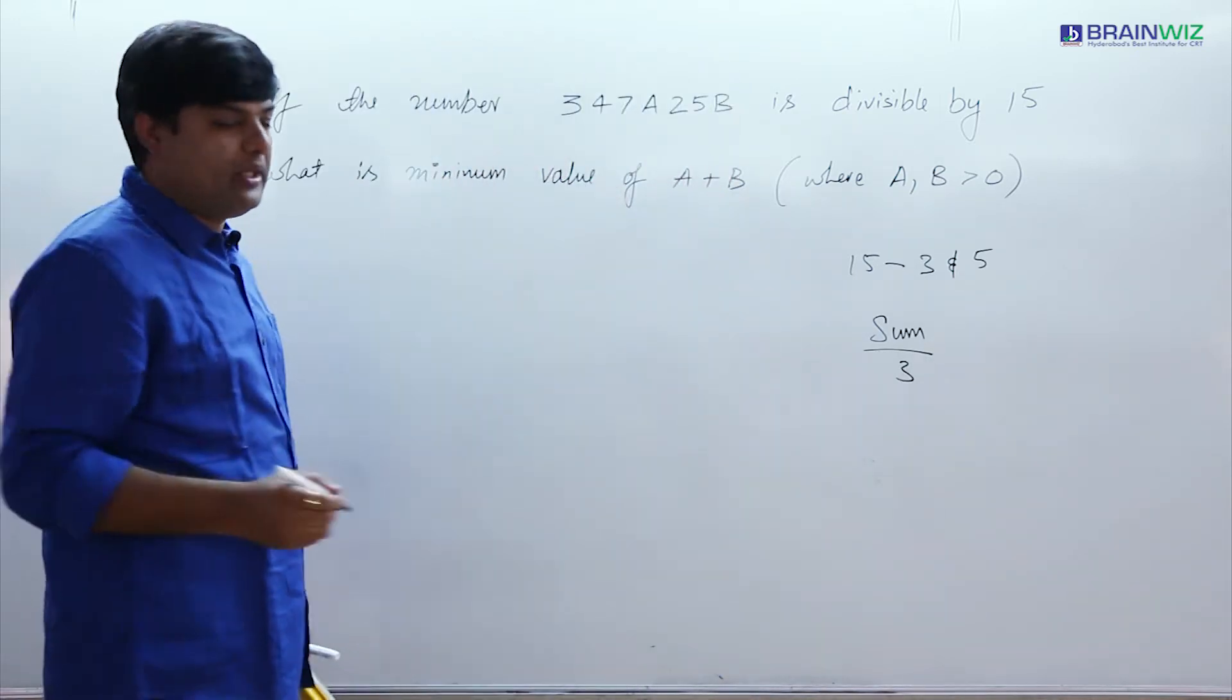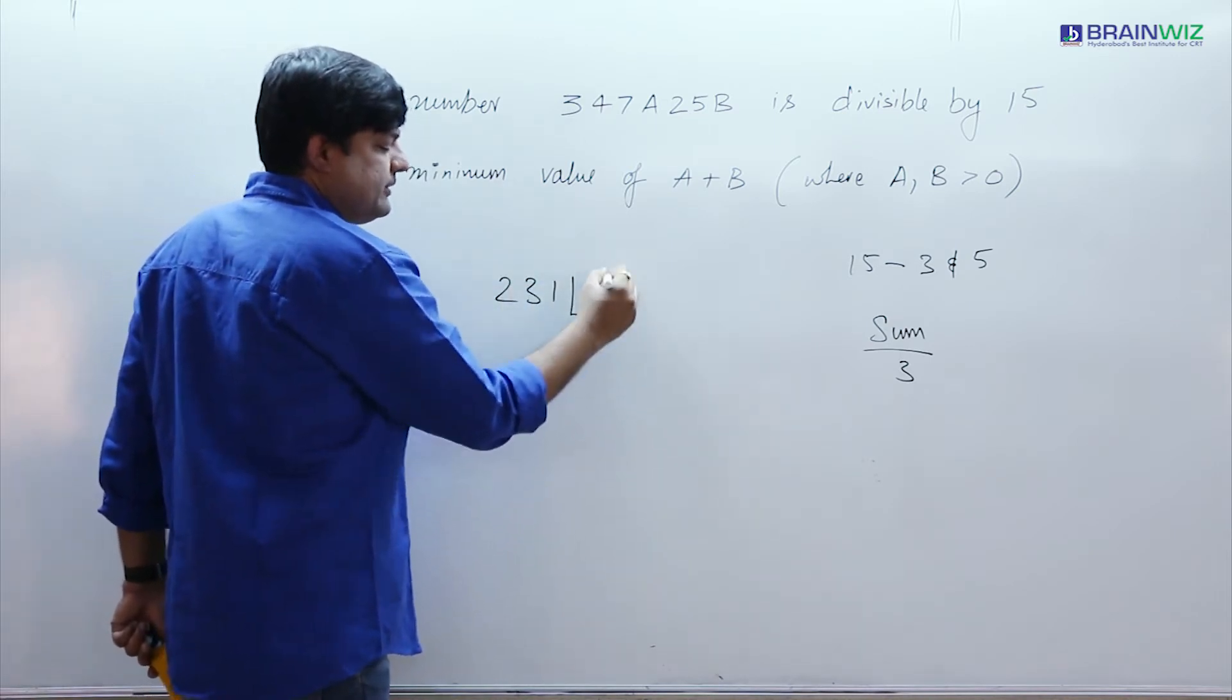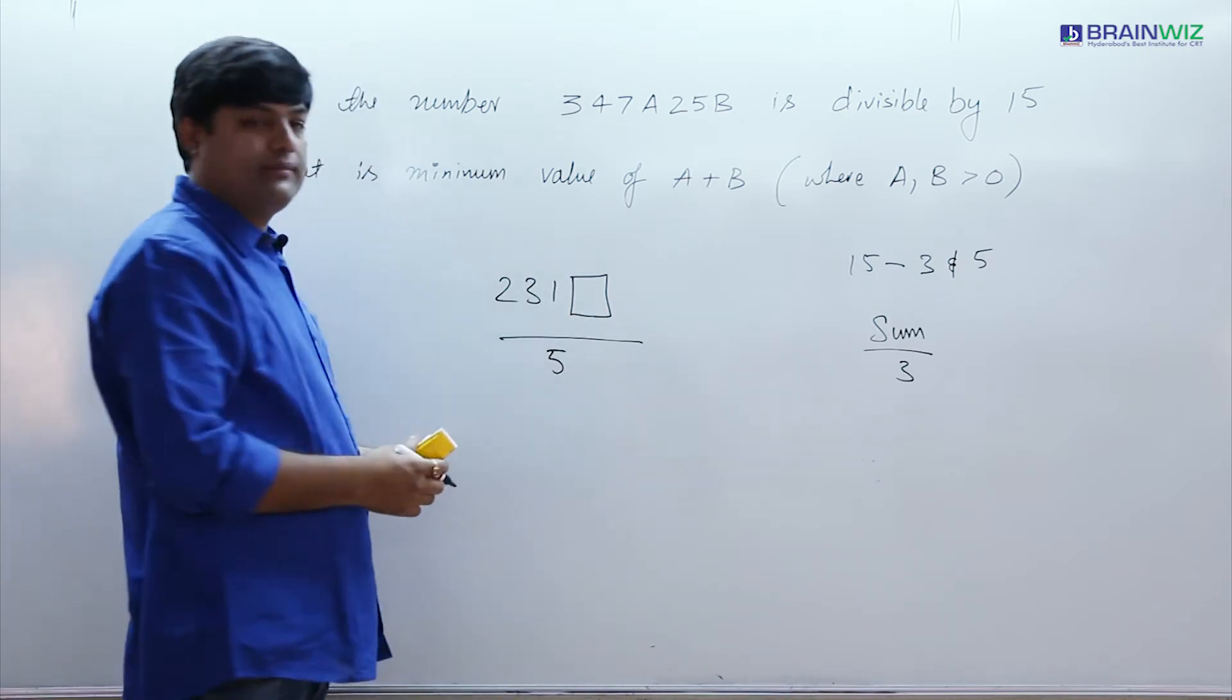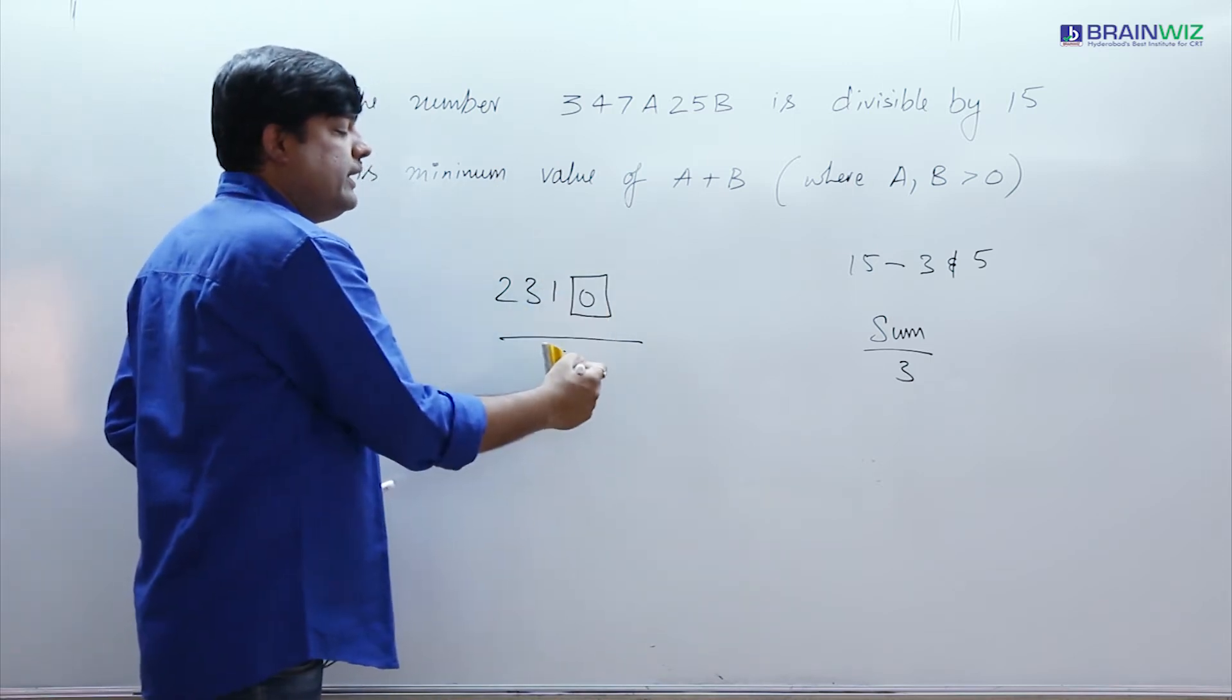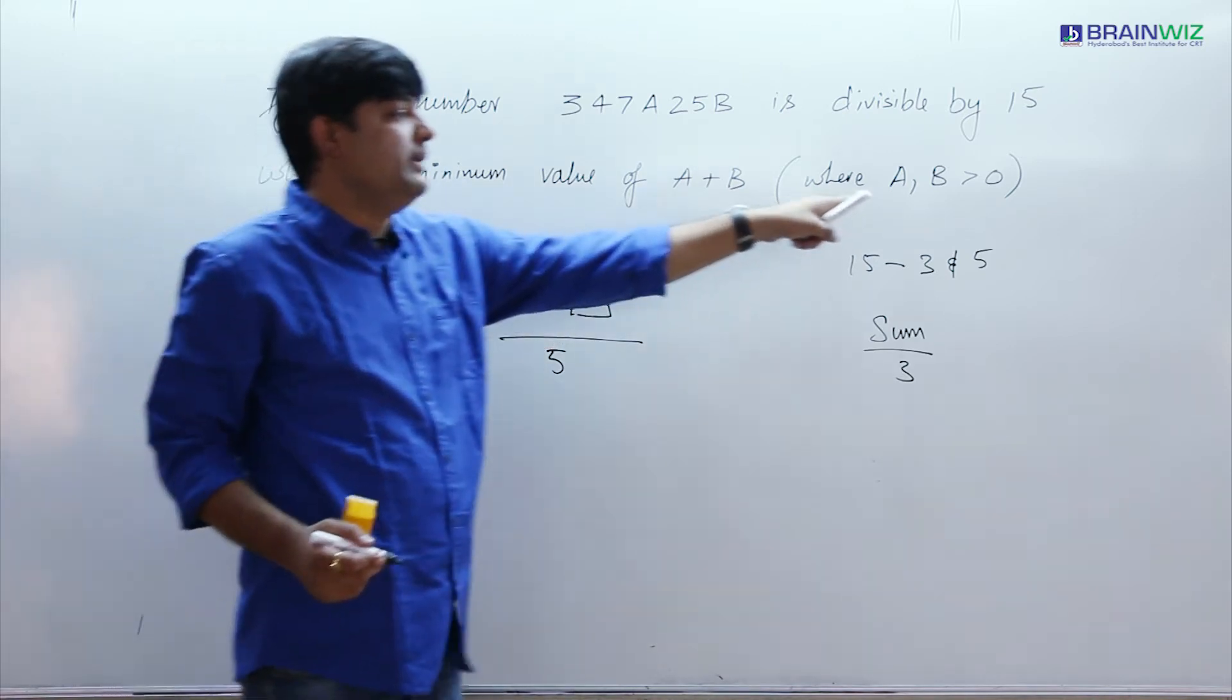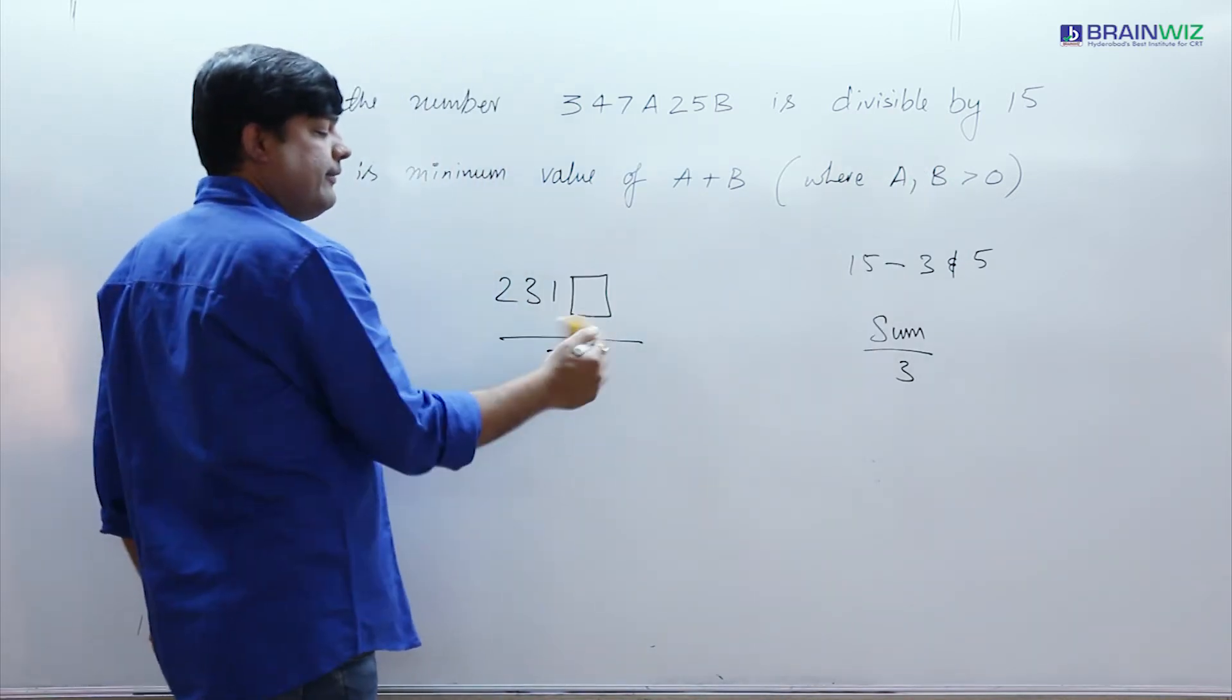Now let me tell you a sample question. 2, 3, 1 and this is missing. What is the value of this missing term so that this number should be divisible by 5? So as you know that this value can either be 0 or it can be 5. But I cannot take 0 here. He told you the missing values are greater than 0. Now it has to be 5.